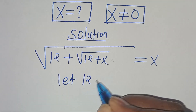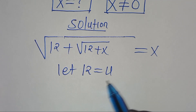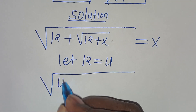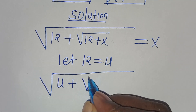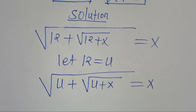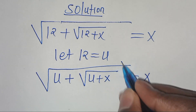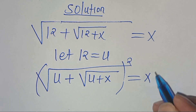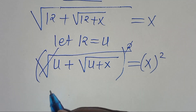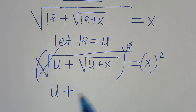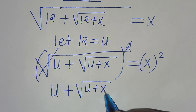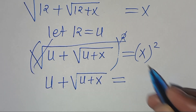The first step is to let 12 be equal to u. So let's substitute u, so that we have the square root of u plus the square root of u plus x, equal to x. The first step is to eliminate the square root sign, so let's square both sides. Now we have u plus x times the square root of u plus x, equal to x squared.